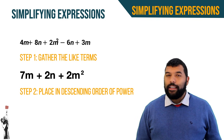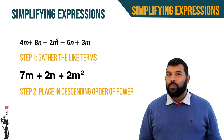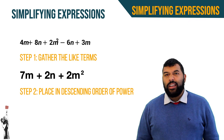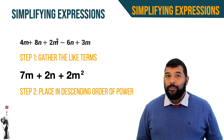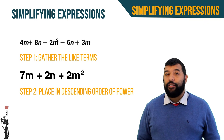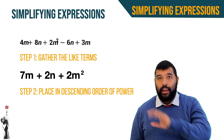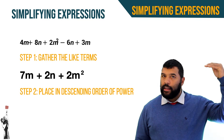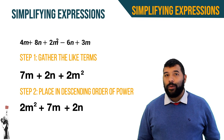Step two: place your answer in descending order of power. We have m squared, m, and n. A simple rule of thumb is alphabetical order first, then power order from highest to lowest. So we end up with 2m squared plus 7m plus 2n — first the m's in descending power, then the n's.